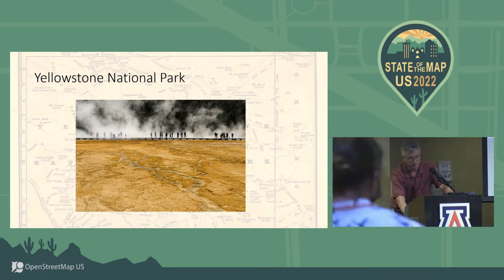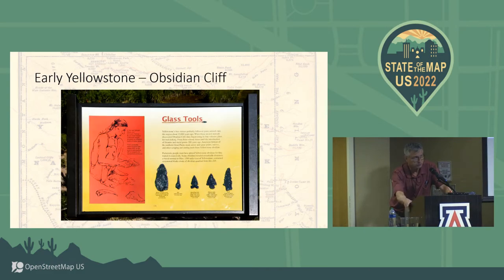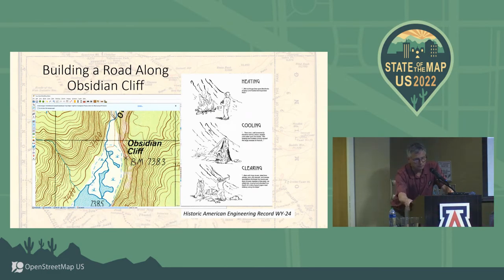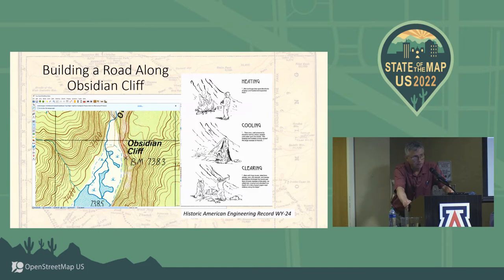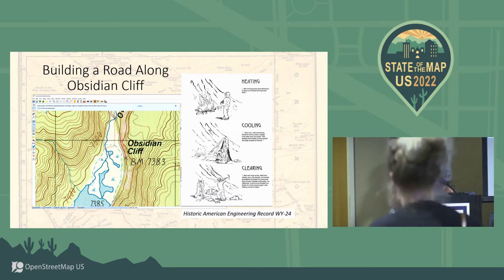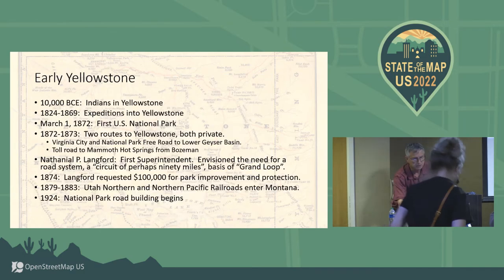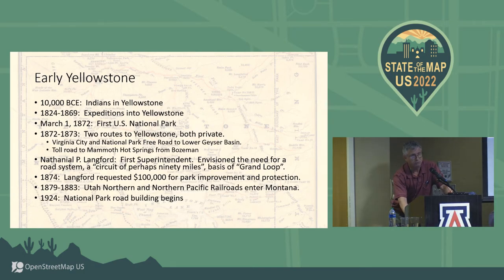We also visited Yellowstone — lots of tourists and hydrothermal features. The history of Yellowstone goes back at least 12,000 years, when Indians mined obsidian from Obsidian Cliff, and some of those tools have been found as far away as Ohio. This map shows Obsidian Cliff between Mammoth and Norris Geyser Basin. The picture on the right shows how they built the road there in the 1880s — they heated up the obsidian with big fires, then poured water on it to shatter it, making clearing it away much easier.